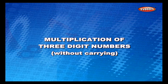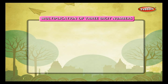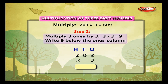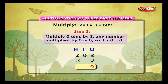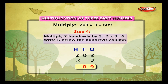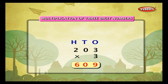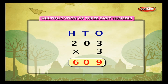Multiplication of three-digit numbers without carrying. Example: multiply 203 by 3. Arrange them in columns. Multiply 3 ones by 3 — 3 into 3 is equal to 9. Write 9 below the ones column. Multiply 0 tens by 3 — any number multiplied by 0 is 0, so 3 into 0 is 0. Write 0 below the tens column. Multiply 2 hundreds by 3 — 2 into 3 is equal to 6. Write 6 below the hundreds column. Thus, 203 into 3 is equal to 609.